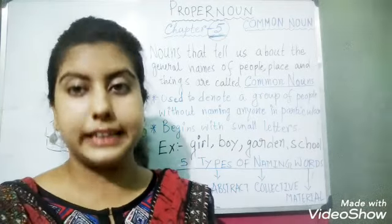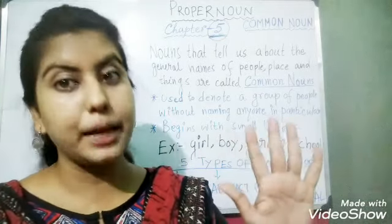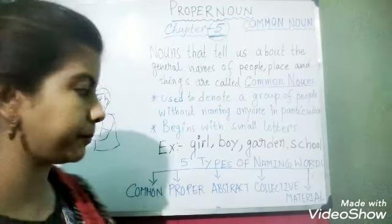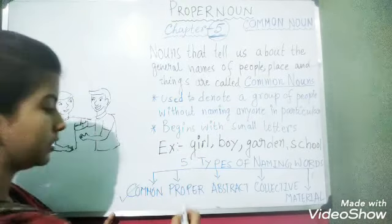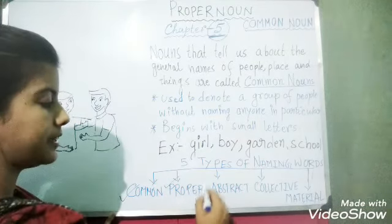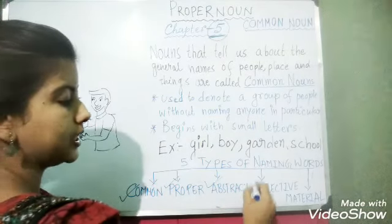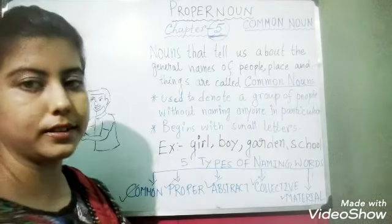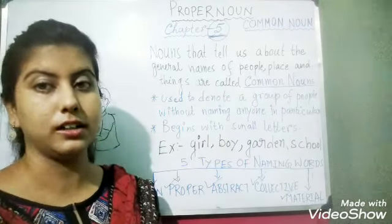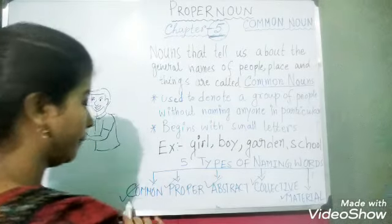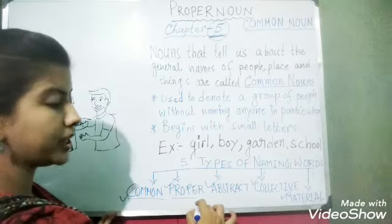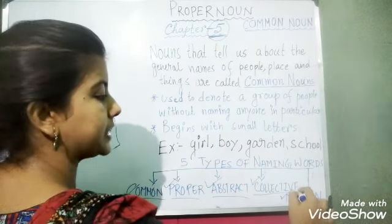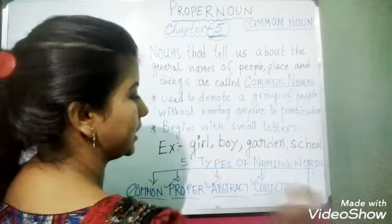There are five types of naming words. They are: common noun, proper noun, abstract noun, collective noun, and material noun.